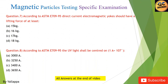Question 7: According to ASTM E709-95, direct current electromagnetic yokes should have a lifting force of at least: (A) 15 kg; (B) 16 kg; (C) 17 kg; (D) 18 kg.